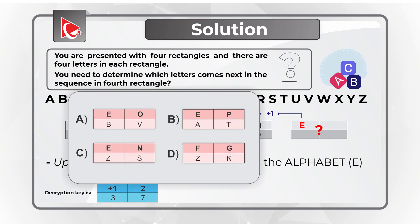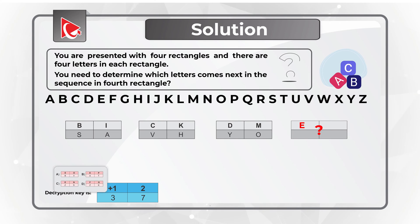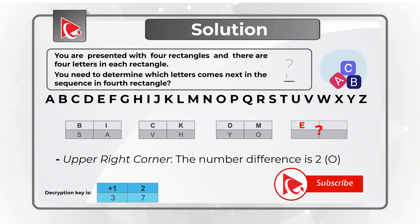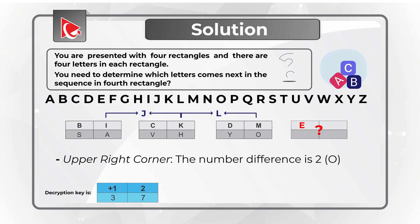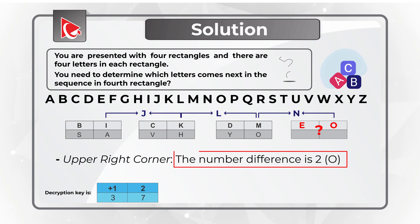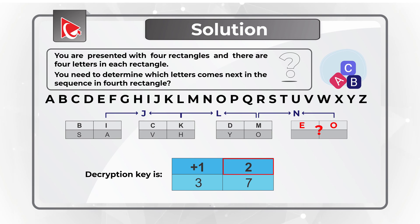But if you look at the set of answers, choices A, B, and C all have letter E in the upper left corner. Now let's look at the upper right corner of the rectangles. The letters in the main sequence are I, K, and M. If you know the English alphabet: H, I, J — which is missing — K, L, next is M, and O — which means that the increment is 2, matching the second number in our decryption key.